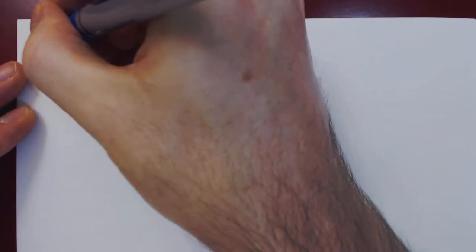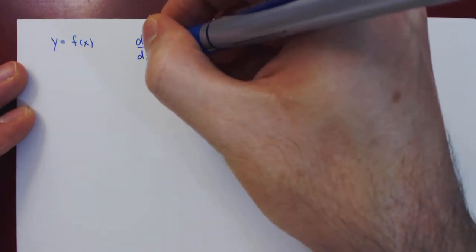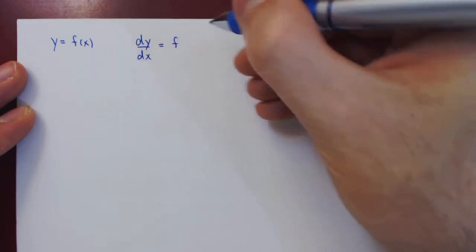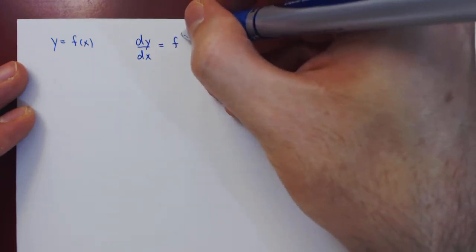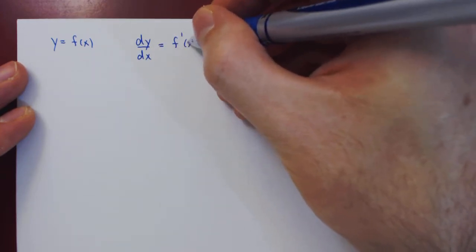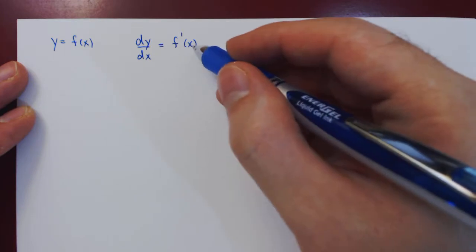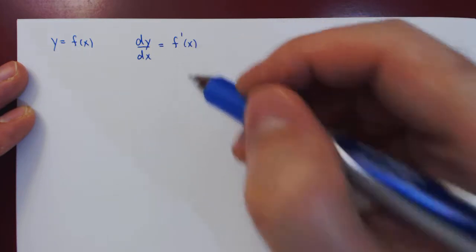In this video we will introduce the notion of the differential of a function. Say we have a function y equals f of x, and we can find the derivative of y with respect to x, which we can also write as f prime of x, being the slope of the function at x.